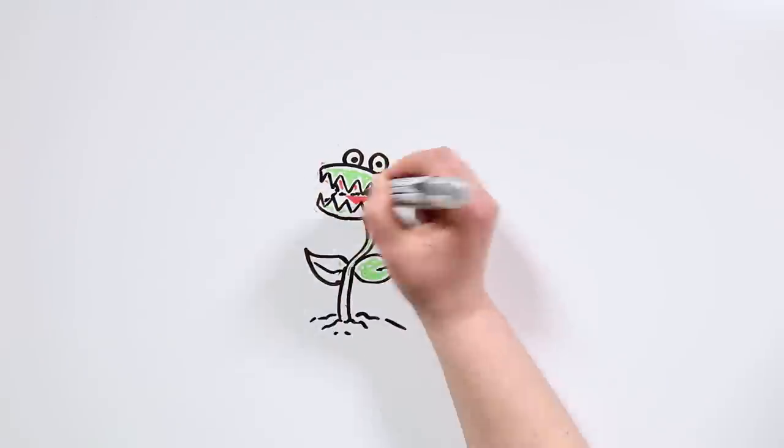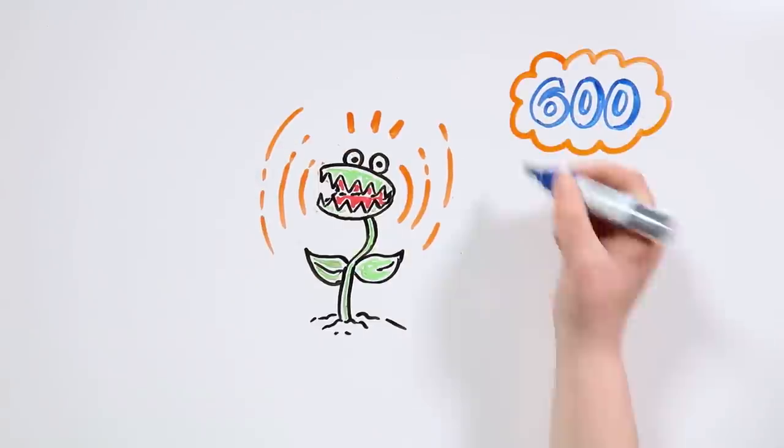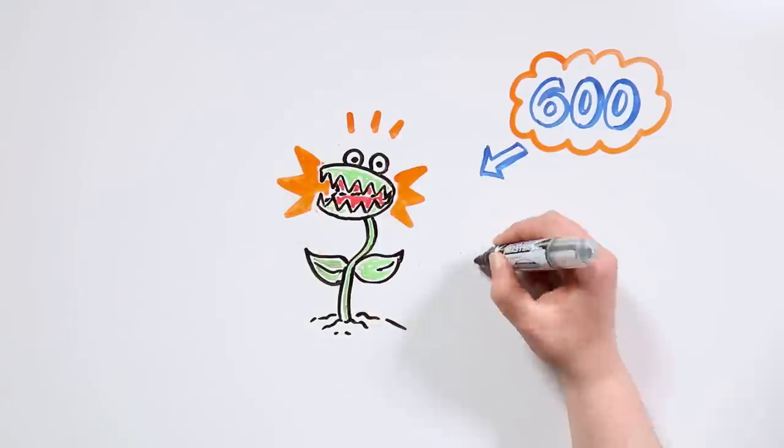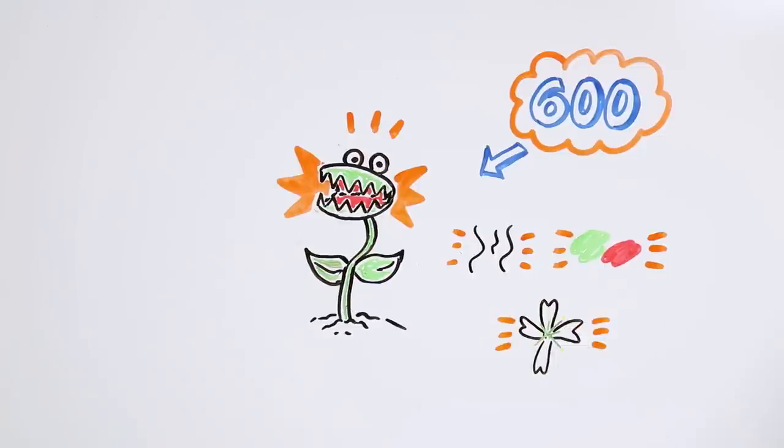Carnivorous plants have the ability of attracting, catching and digesting their prey. There are more than 600 different species of carnivorous plants, and depending on their kind, they use different ways to hunt, although the smell, color and nectar of their flowers play an important role.